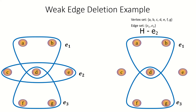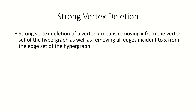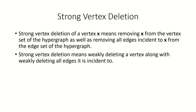Let's move on to strong deletion of vertices. Strong vertex deletion is when we remove a vertex as well as all the edges that contained it. In other words, we weakly delete all edges incident to a vertex, and then weakly delete our vertex. What remains is the set of vertices minus the vertex we deleted, along with only the edges that are entirely between the vertices that we did not delete.